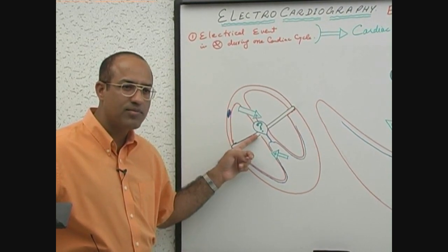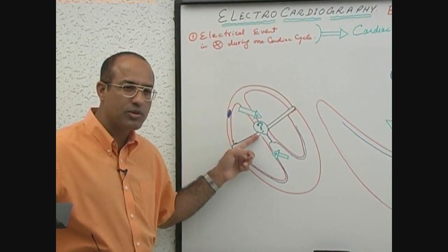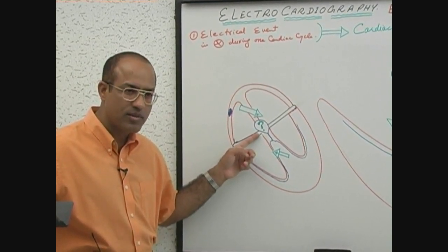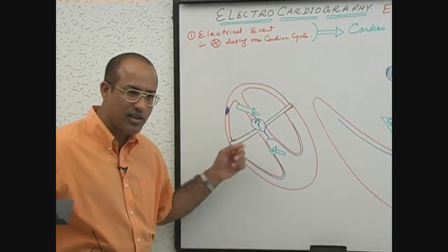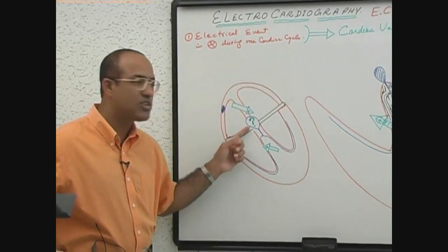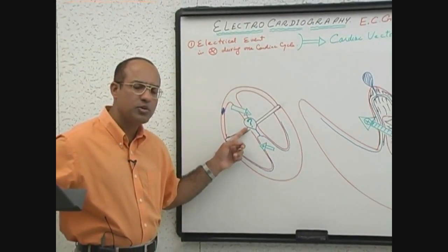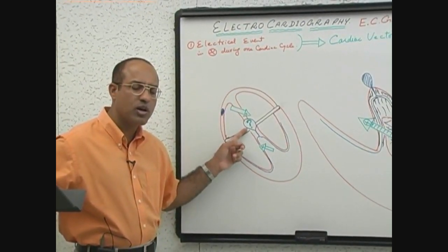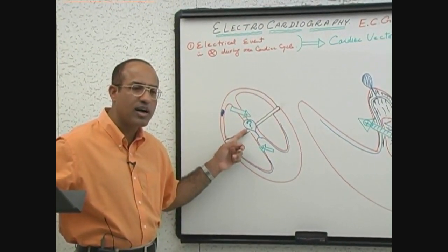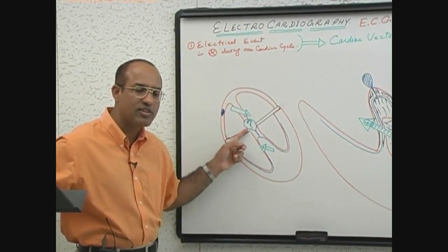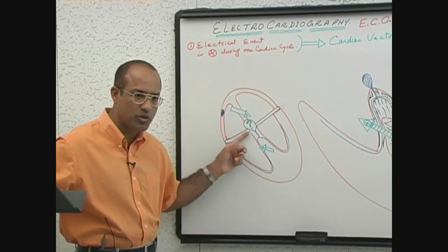To move the ECG machine. During AV nodal conduction, the heart is electrically silent. These are the first two events.